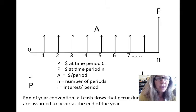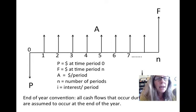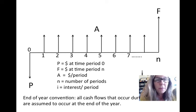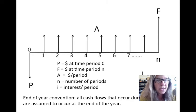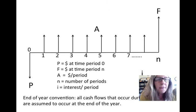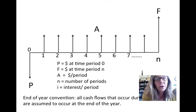To remember the conventions from a couple of videos ago: we have a timeline with a present value P and a future value F; we sometimes have equal annual payments A; there are n number of time periods; we use interest to shift things from one time period to the next; and the end-of-period convention assumes all cash flows occurring during the year occur at the end of the year.